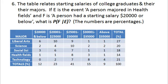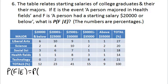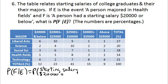The numbers in the table are percentages. So we want the probability of F given E. F is the starting salary — the person had a starting salary of $20,000 or below. Given E, which is the person majored in health fields. It helps to write out in words what they're saying rather than just using the letters.